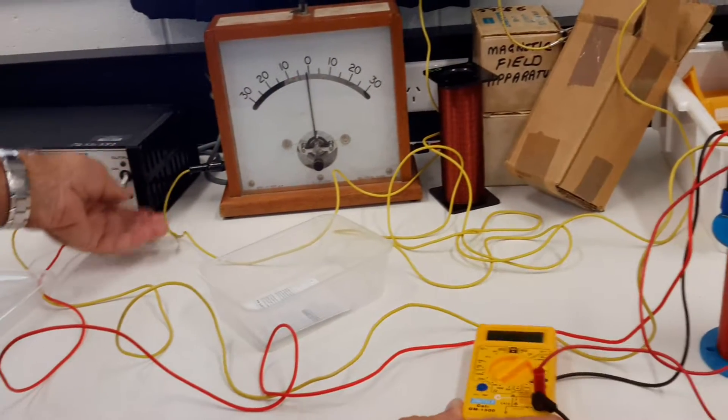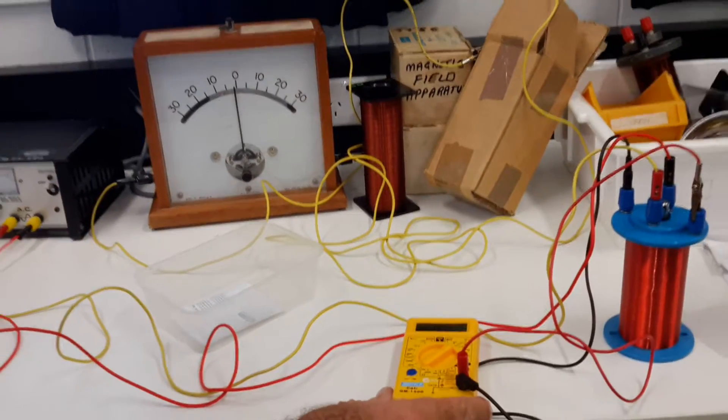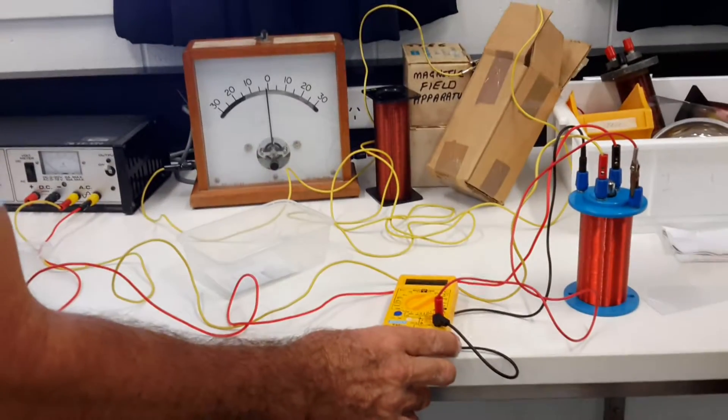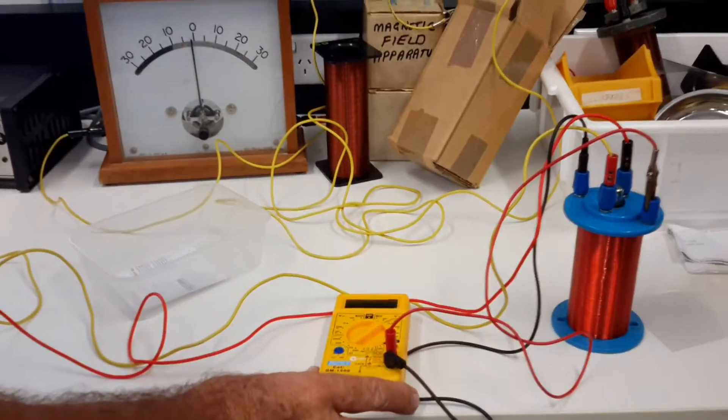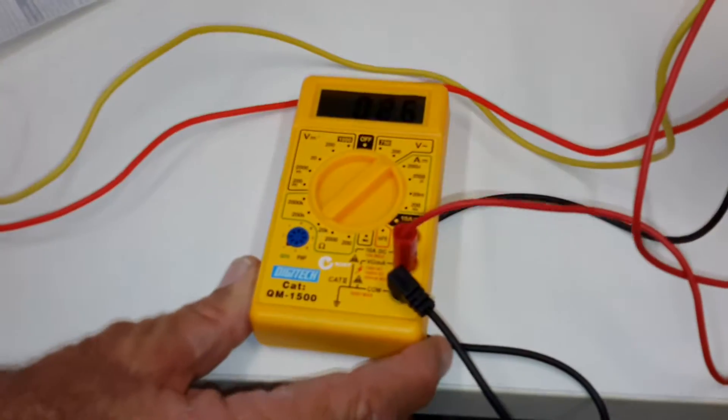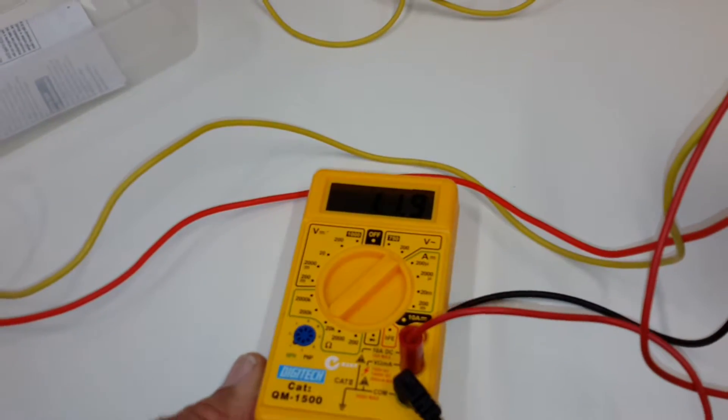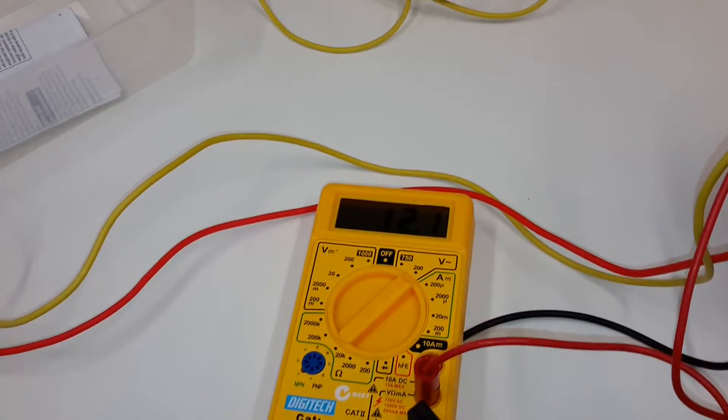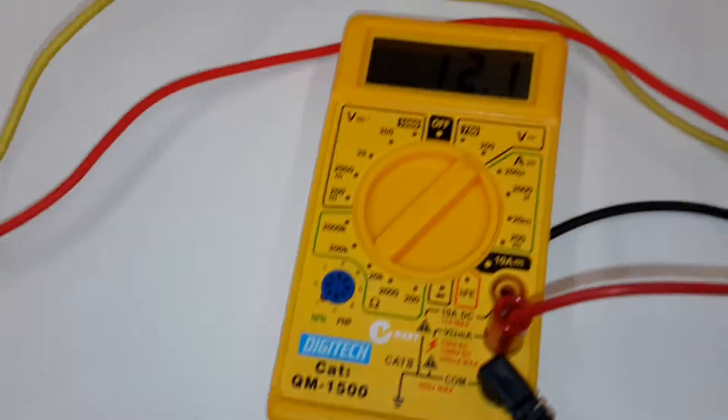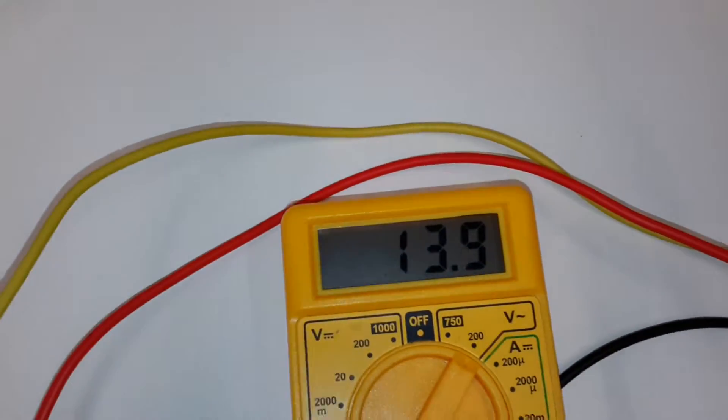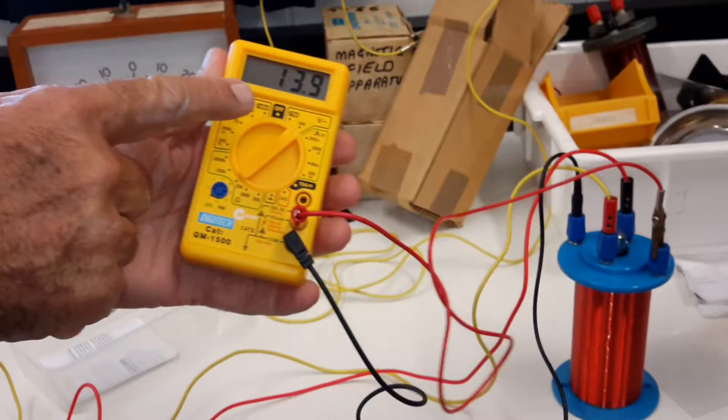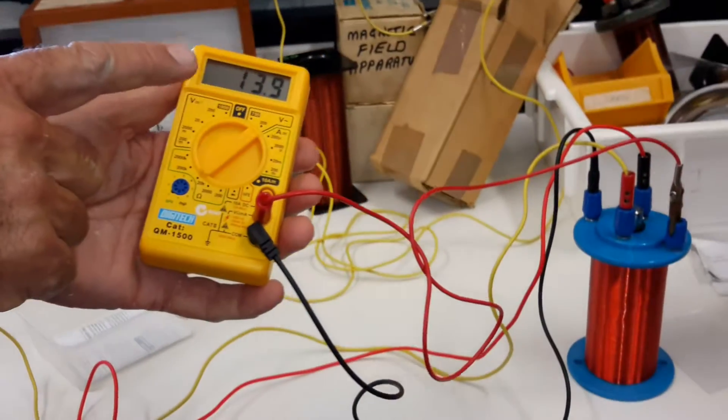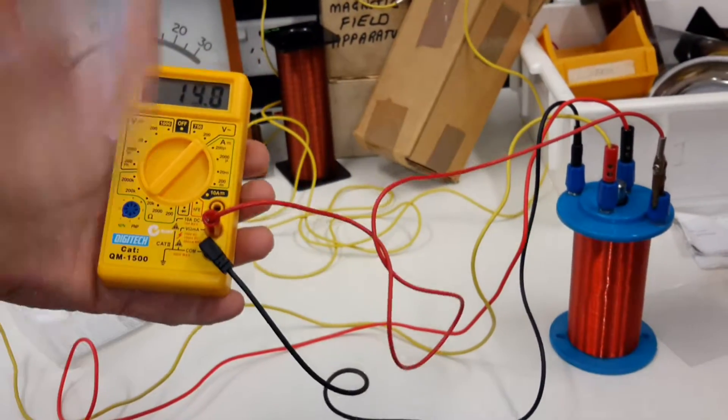We're on AC. We've got to turn it on. There we go. Now in the primary coil, we've got 5 volts in the primary coil and 13.9 volts in the secondary coil. So that would be called a step-up transformer.